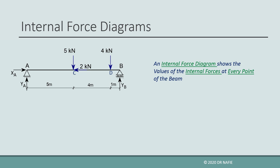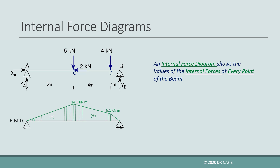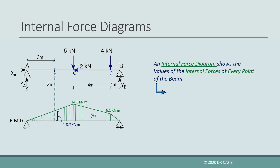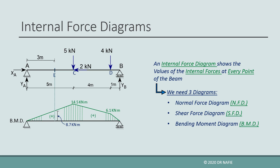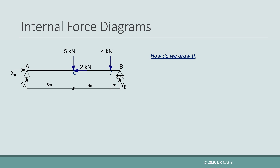The internal force diagram is a sketch that gives the value of the internal forces at every point on the beam. It can be visualized as an X-ray that reveals the values of the internal forces along the length of the beam. For example, the bending moment diagram informs us that at points A and B the bending moment is zero, that it is 14.5 kN·m at point C and 6.1 kN·m at point D. We can read the value at any point E by going to that location on the diagram and measuring the value to scale. Because we have three types of internal actions, we need three diagrams: a normal force diagram, a shear force diagram, and a bending moment diagram.